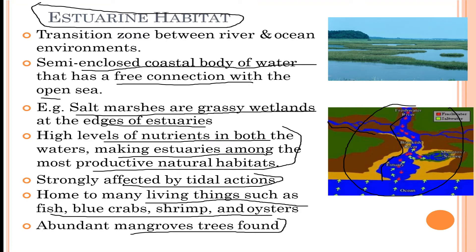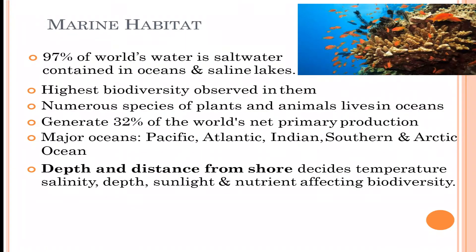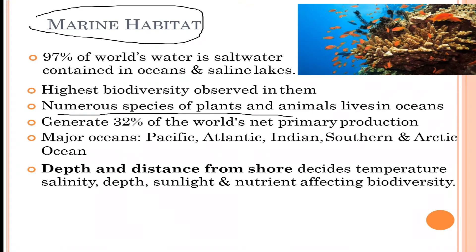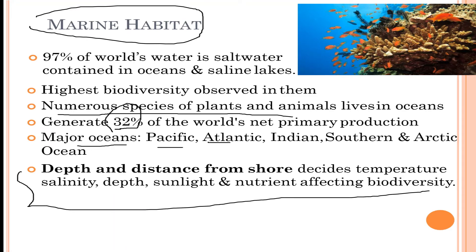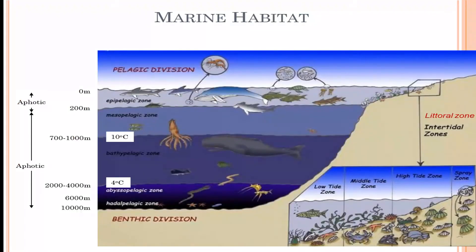Estuaries are strongly affected by tidal action and are home to many living things such as fish, blue crab, shrimps, oysters, and abundant mangrove trees. Moving on to marine habitat: it constitutes 97 percent of the world's water in salt lakes contained in oceans and saline lakes, has the highest biodiversity, numerous species of plants and animals, and generates about 32 percent of the world's net primary production. The major oceans are the Pacific, Atlantic, Indian, Southern, and Arctic oceans.